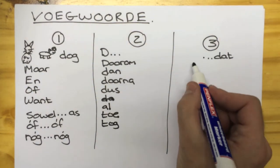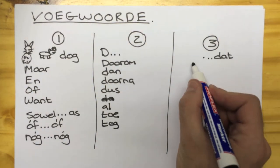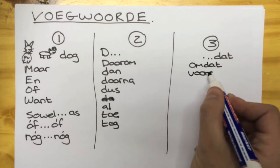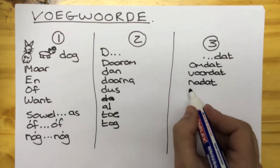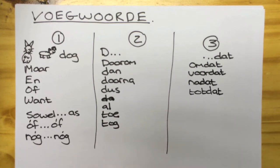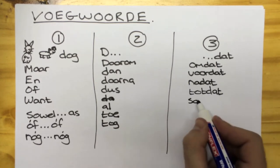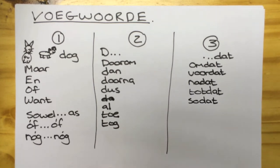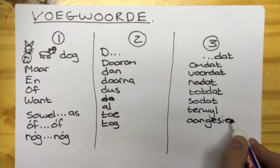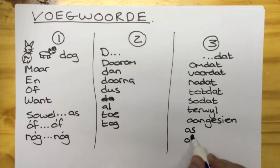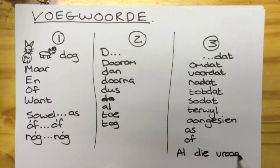And then all the dat words that belong to group 3 are: omdat, voordat, nadat, todat, soerdat. And then we also get words such as terweil, and aangesin, and as, and of. You'll note that there's an of in group 3 and in group 1 — both mean different things.